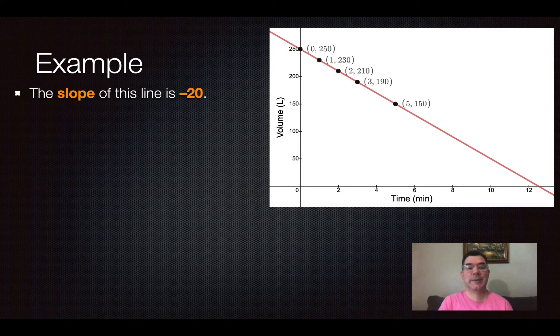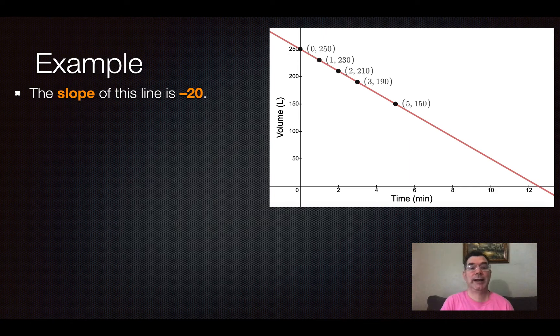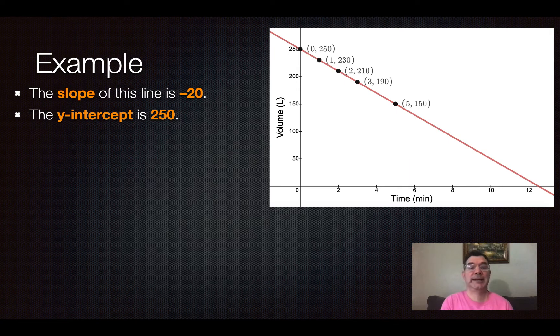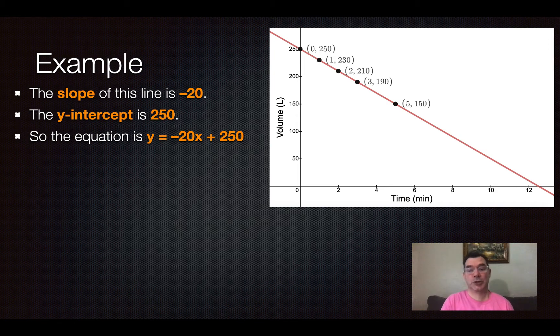All right. So using that same example, we find the slope of that line just like we would with any other line and that's negative 20. The y-intercept, which is where we started, is 250. So the equation is y equals negative 20x plus 250.